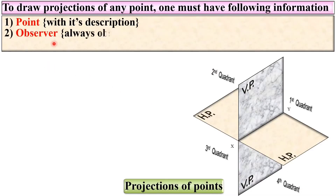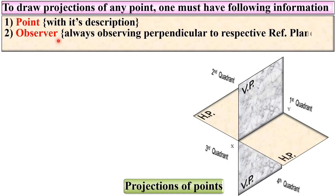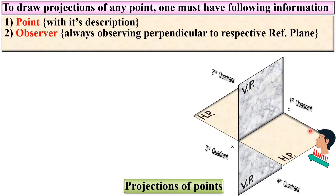Next, the observer — that means the position of the observer observing perpendicular to the respective reference plane. These are actually the respective reference planes and the observer must be perpendicular to this reference plane. Here you can see this is the observer which is exactly perpendicular to the VP, that means the vertical plane, which is considered as a reference plane.